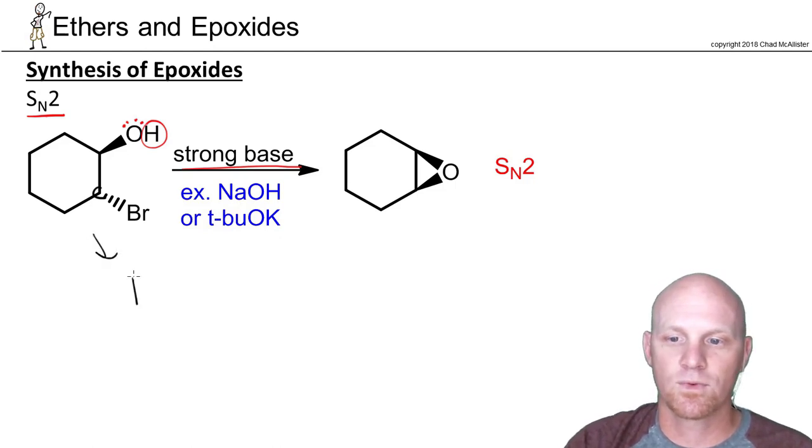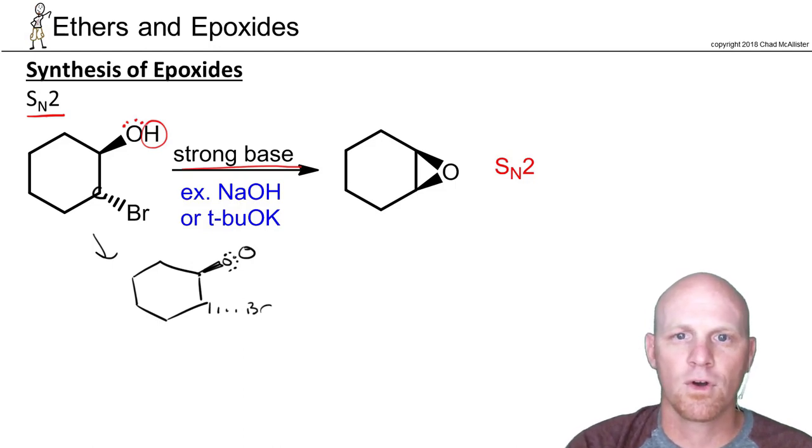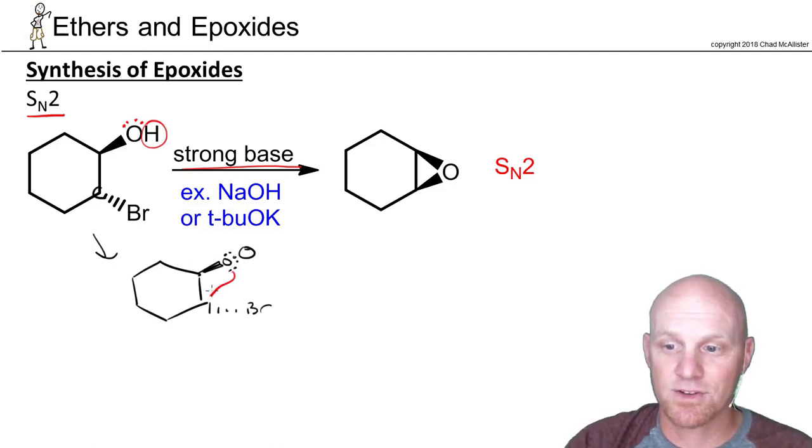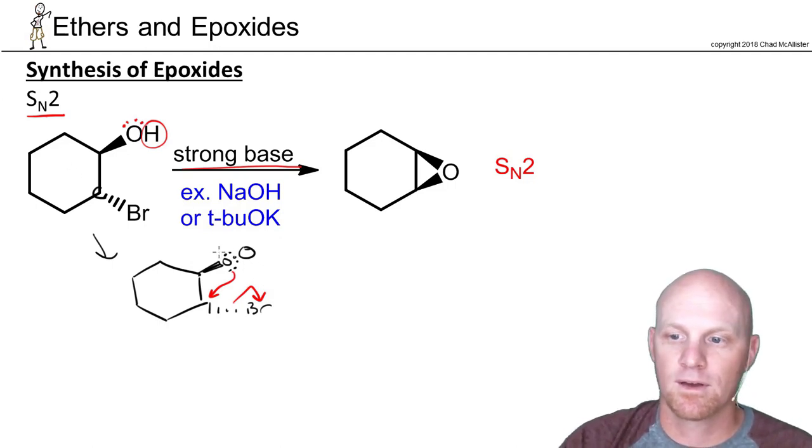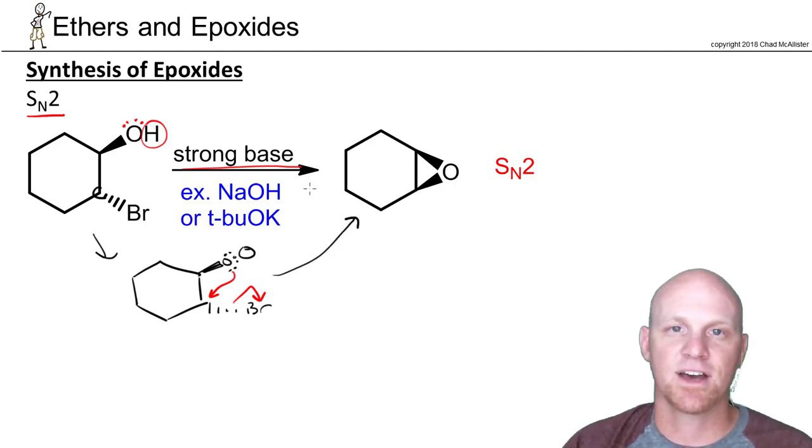And in this case then, once we've deprotonated that hydroxyl group, we'll have a nice strong nucleophile, which is what we need to do SN2. So in this case, it's just going to come in here and do backside attack, kick off the leaving group, and that gets us our epoxide here.